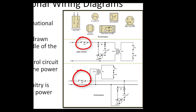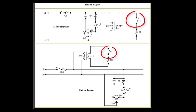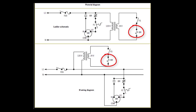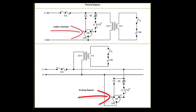When L1 disconnect is closed, the transformer is powered. When FS is closed, the IBR coil is energized. At this point, the normally closed contacts open, and the normally open contacts close. The BM runs at high speed.